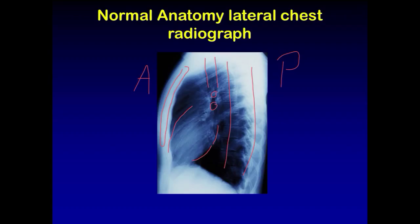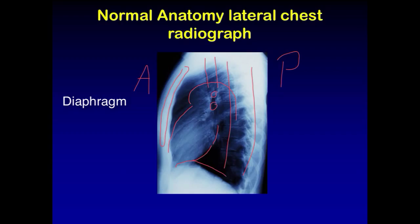Lateral views are helpful to determine whether the heart has normal size or is enlarged. We will talk about that in another video. Please also identify the aortic arch, which can be seen as a faint shadow or opacity. And again, be sure to identify the diaphragm as a line posteriorly with a recess.